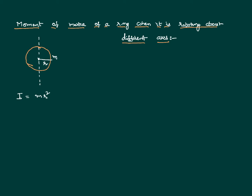Now, if the same ring is rotating about a different axis — consider the same ring, but the axis is tangential to the ring, not passing through the center, though it is still perpendicular to the plane. I know the moment of inertia about an axis passing through the center perpendicular to the plane, which can also be called the center of gravity axis, as mr².